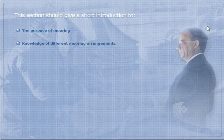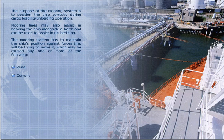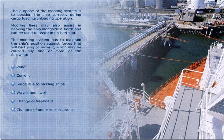This section gives a short introduction to the purpose of mooring and knowledge of different mooring arrangements. The purpose of the mooring system is to position the ship correctly during cargo loading and unloading operations. Mooring lines may also assist in heaving the ship alongside the berth and can be used to assist in unberthing.